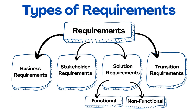There are several types of requirements. First, business requirements are typically high-level business goals and objectives. As per the BABOK guide, business requirements are defined as statements of goals, objectives, and outcomes that describe why a change has been initiated. A typical example for a large private sector bank could be to automate a customer relationship management system so they can offer better customer services and improve customer response time by 70% in the next six months.